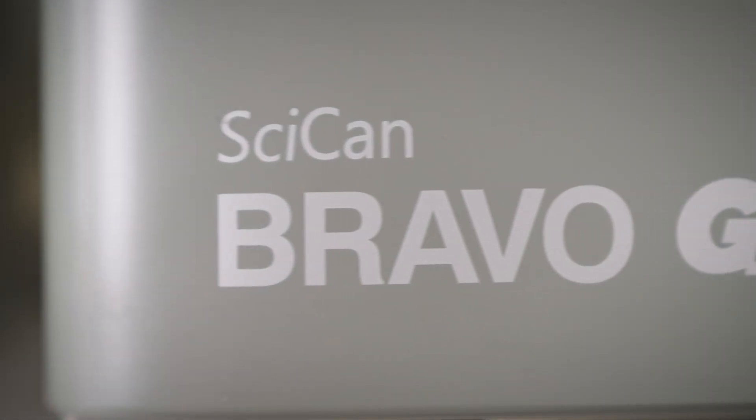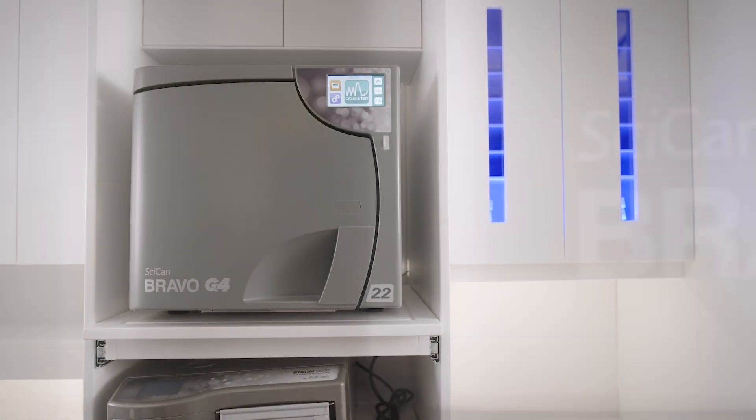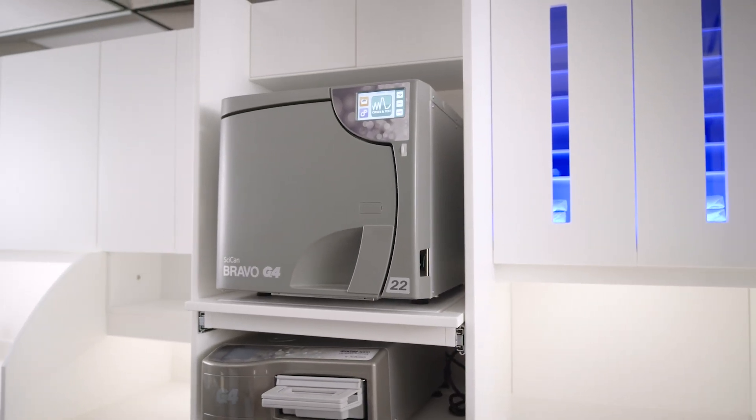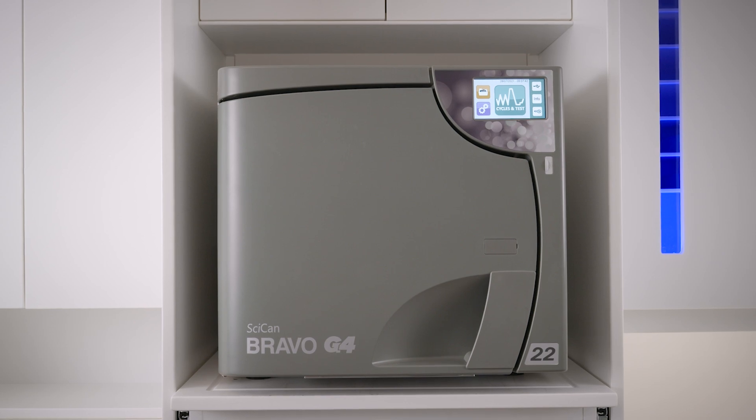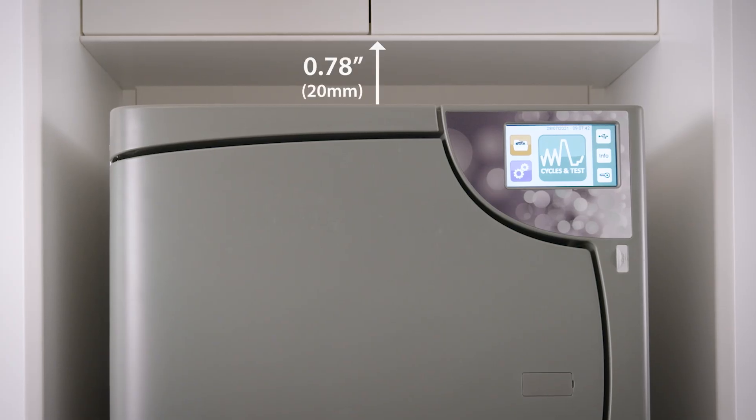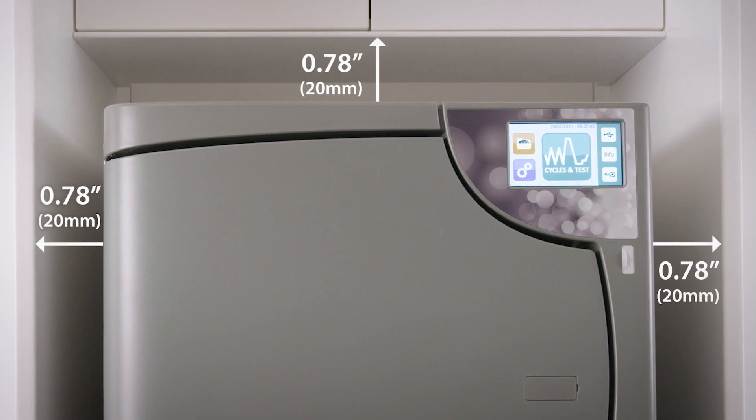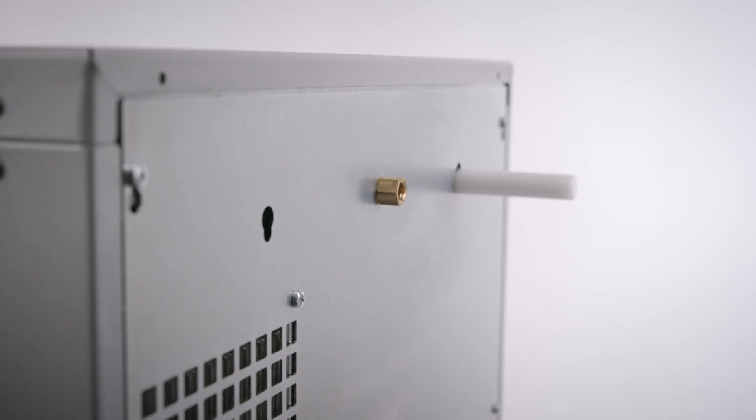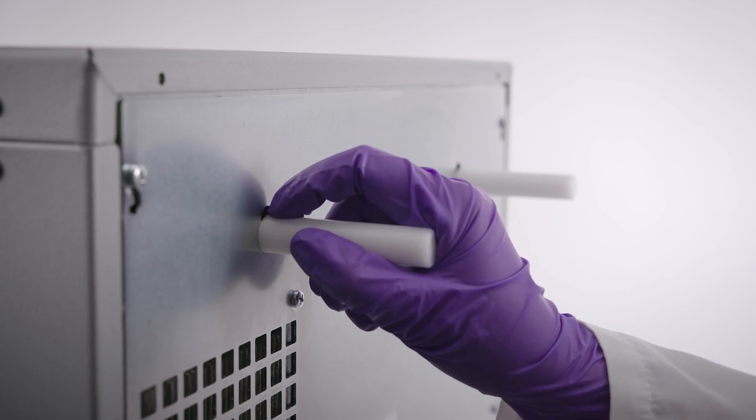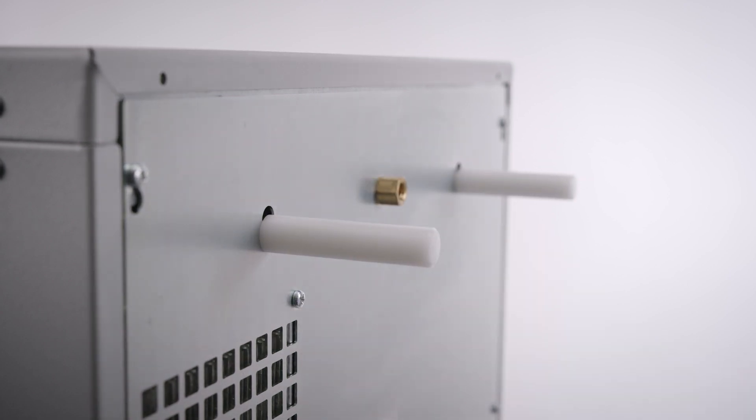When installing the Bravo G4, ensure there is adequate space around the machine to provide effective ventilation, including 20mm or 0.78 inches space for the top, left and right sides of the machine, and 70mm or 2.75 inches space at the back. Spacers are provided with the unit to ensure proper spacing at the back.